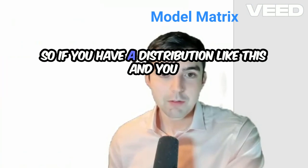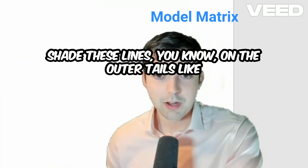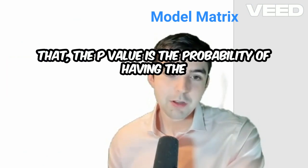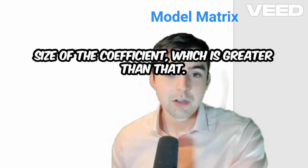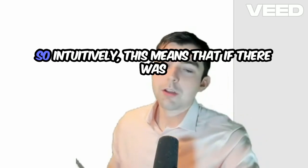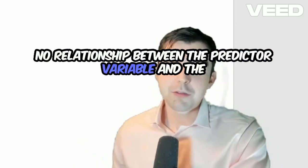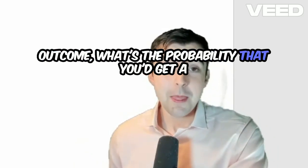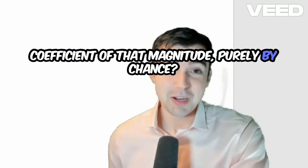So if you have a distribution like this, and you shade these lines on the outer tails like that, the p value is the probability of having the size of the coefficient which is greater than that. So intuitively, this means that if there was no relationship between the predictor variable and the outcome, what's the probability that you'd get a coefficient of that magnitude purely by chance.